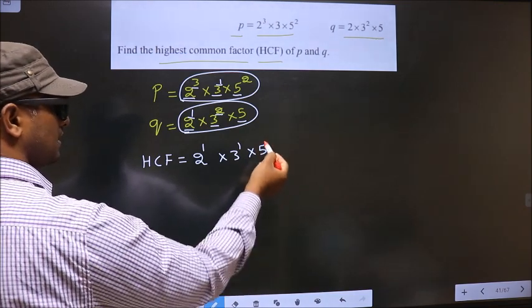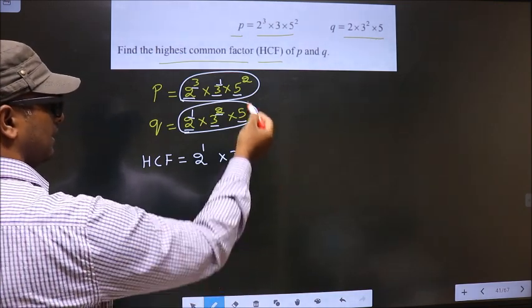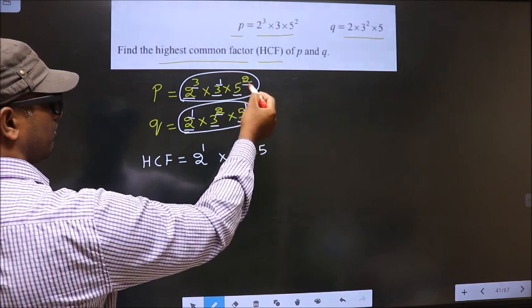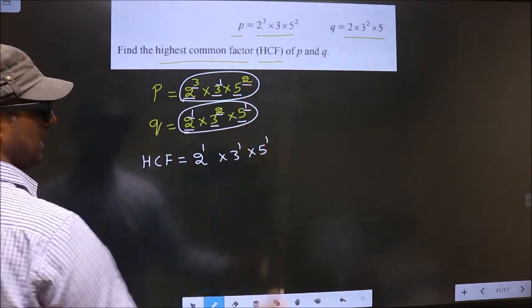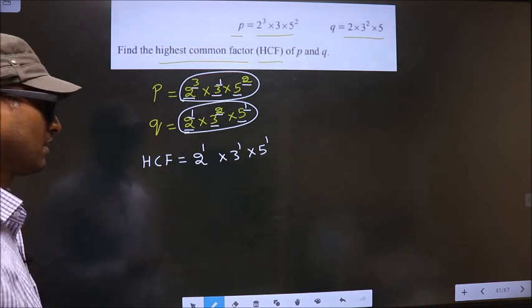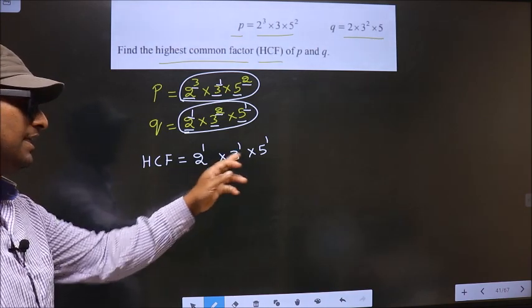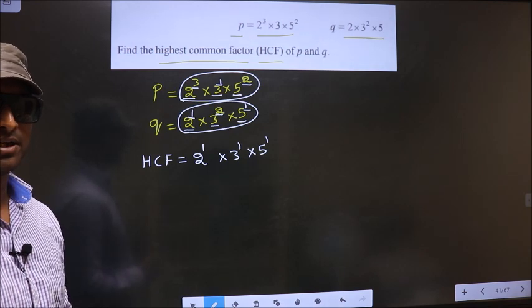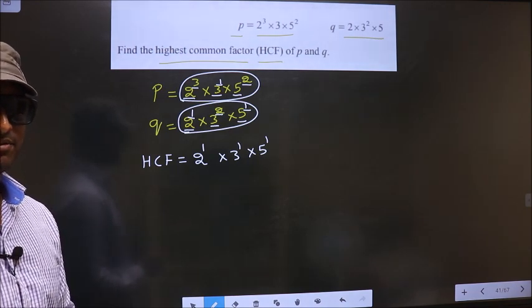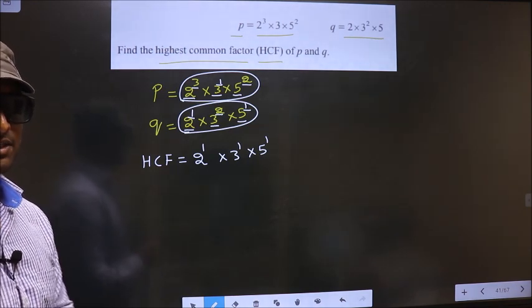Now the question arises, what power will it take? It will take the smaller of both powers. So smaller of 1 and 2 is 1. So here it will take 1. So now you multiply these numbers. Whatever number you get, that is your HCF. Okay. So let us multiply.